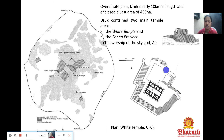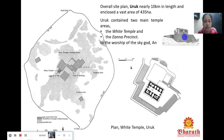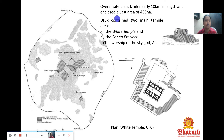The White Temple is raised on a platform, which demonstrates the form of a sloped wall — a form of a ziggurat. A ziggurat is nothing but a stepped pyramid, sloped on all four sides with steps, as understood through learnings from history.